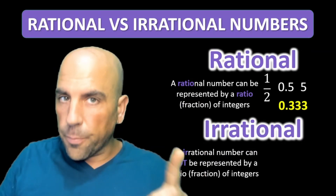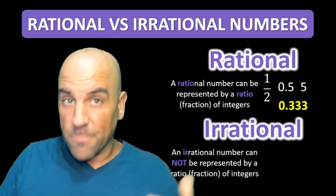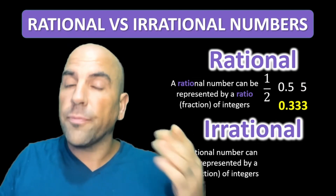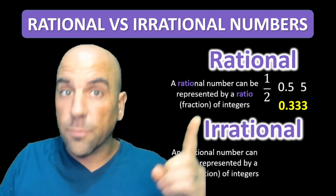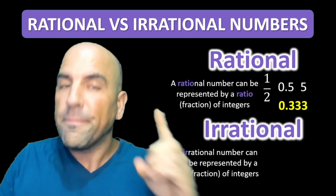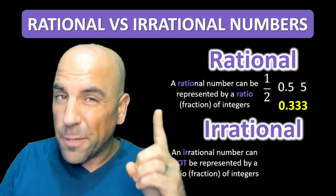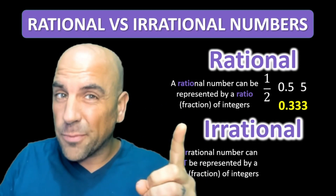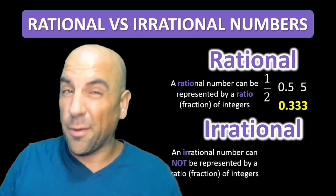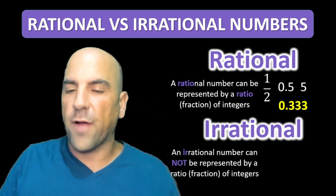0.3333? That's the decimal for one over three. If it's a repeating decimal, it's going to be a rational number — it can be made into a fraction.